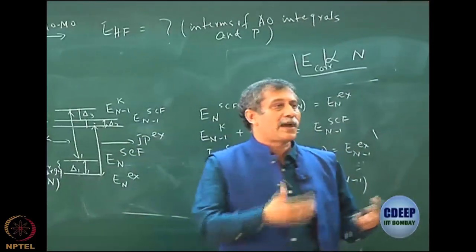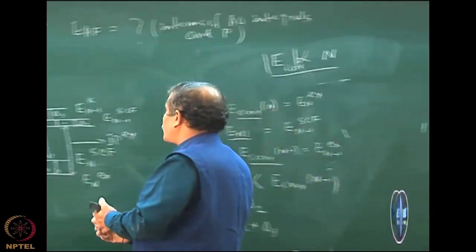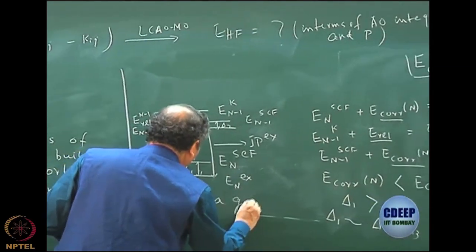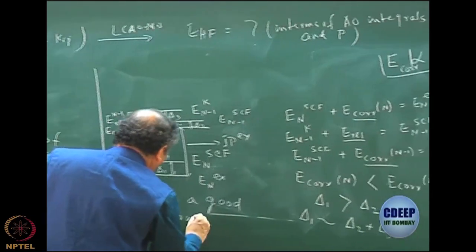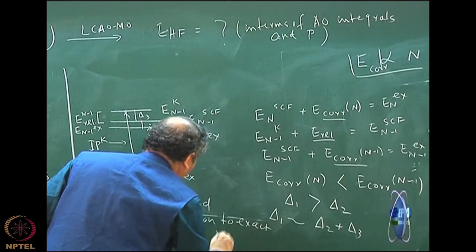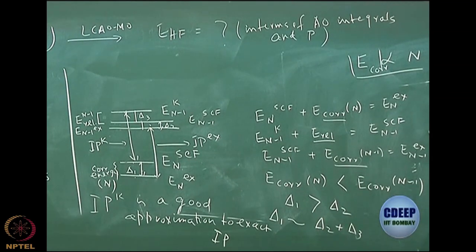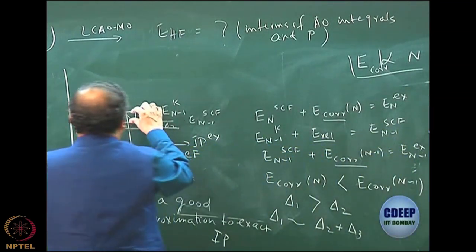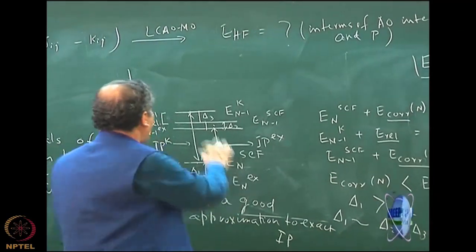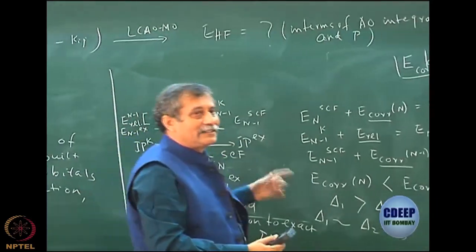How much difference there is depends on the relaxation energy - that is where the approximation will not be exact, but it will be pretty close. This argument shows that IP Koopmans is a good approximation to IP exact, but it is not exact. It cannot be exactly equal. In fact, if it is the outermost orbital, the relaxation is small. But if it is a core orbital, the relaxation becomes very, very large, and then Koopmans' becomes bad.